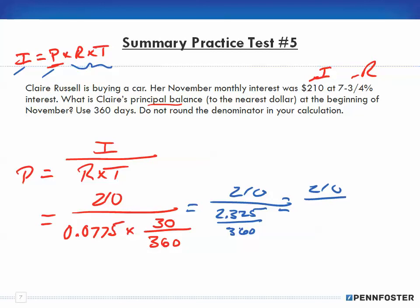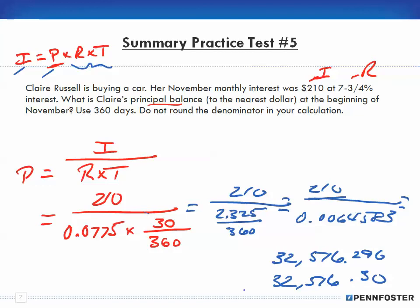I take my 210 and divide it by 0.0064583 and I end up with $32,516.296. I'm going to round that off to 30 cents, so $32,516.30. That's what my principal balance, my principal was, and I'm going to round to the nearest dollar. Since it's 30 cents, it's less than 50, so my answer is $32,516.